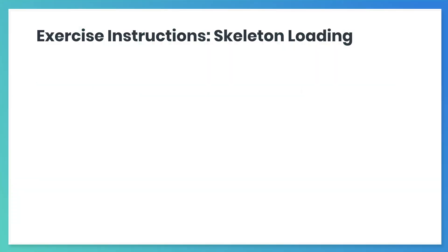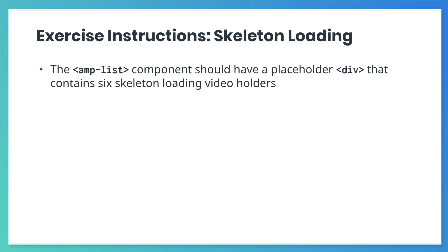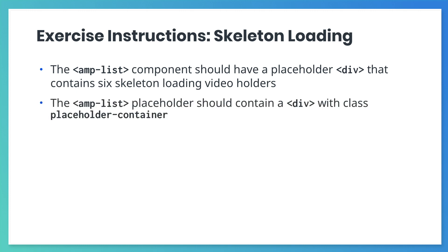Now to add skeleton loading to your solution, add a div tag with a placeholder attribute to the AMP List component. Inside of the placeholder div, add another div with class placeholder-container.